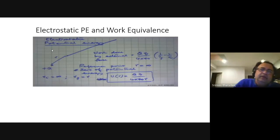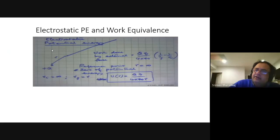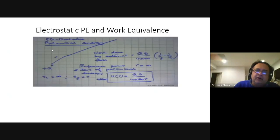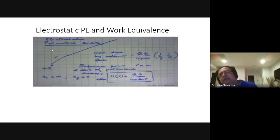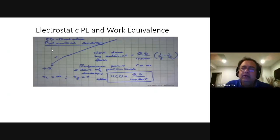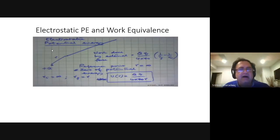What happens when R_i is infinity? You have U(R), the definition of U(R): if the initial point is infinity and the final point is R, that is the work done to bring a charge from infinity to R. At infinity, 1/∞ = 0, so you end up with just the potential: Q/(4πε₀R).